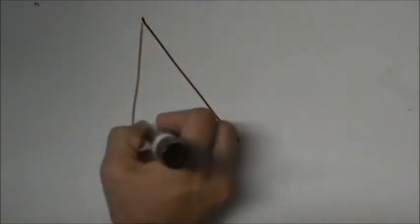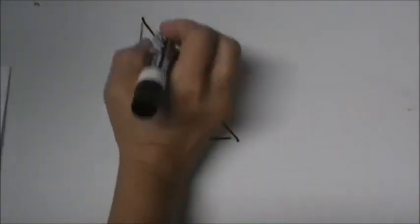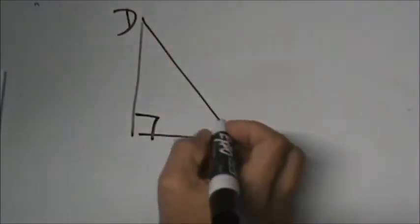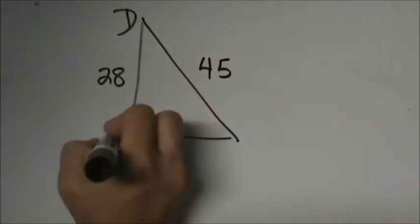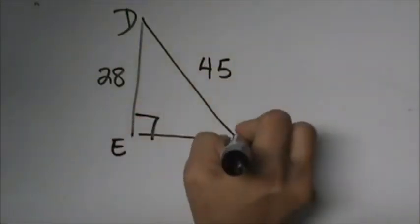Let's look at our triangle. We have a D up here, a 28 here, and a 45 here. I'm going to label E and F for you.